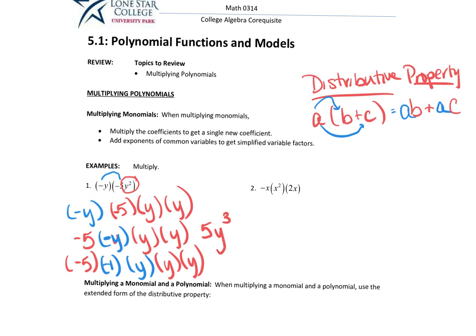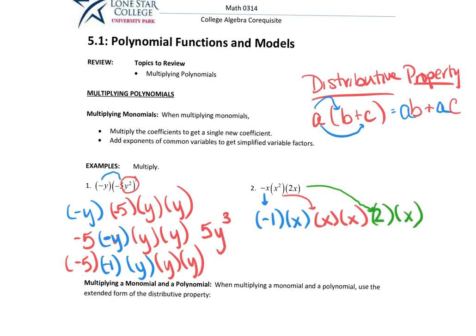On this next one, you have this first term, which can be written as negative one times x. This term is x times x. And then this term is written as two times x. So you have one x here, two x's here, one x here — that's one plus two plus one. You multiply your numbers: two times negative one is negative two. And you have one, two, three, four x's — so that's negative two x to the fourth.